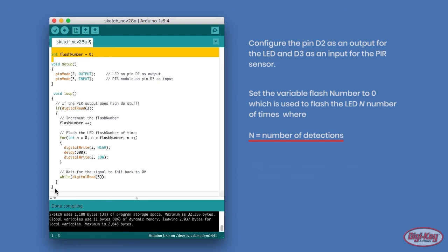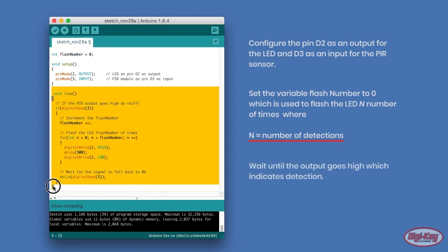Then, in the main code loop, we wait until the output goes high, which indicates a detection. When a detection is made, the software increments the flash number counter and then flashes the LED that number of times.